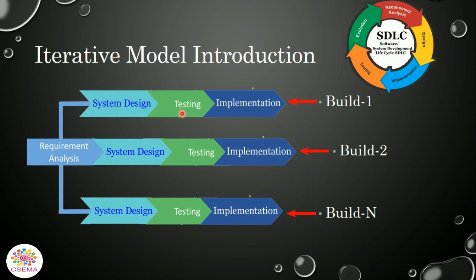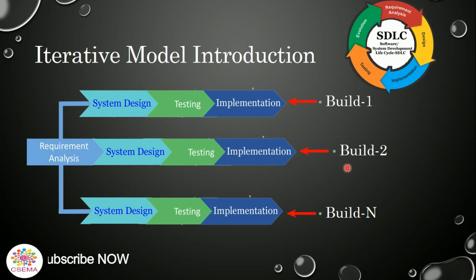When testing is completed, the developed system is implemented into the real environment. This procedure is called the first iteration, or Build 1. When new requirements come up, system design is performed again, then testing is performed, and after testing, implementation is performed. The second version of the software product is released — this is the second iteration, or Build 2.